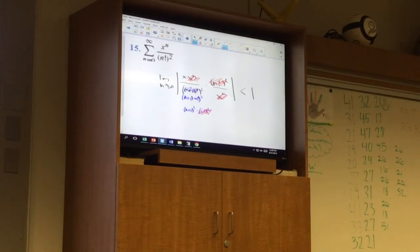And now what I have is that this whole thing is the limit as n approaches infinity of the absolute value of 1 over n plus 1 squared times x. And this has to be less than 1 in order to guarantee convergence. So as n approaches infinity, what does this go to? Zero. Does it matter what x is? No.